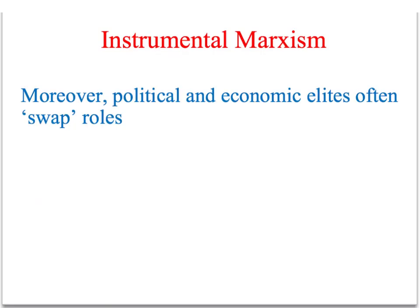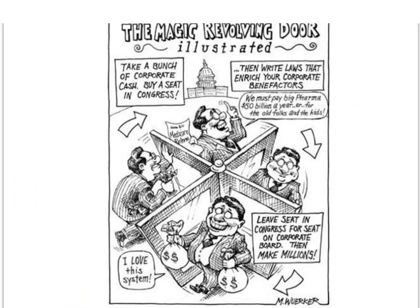Another factor leading to integration of political and economic elites is the constant swapping of roles. On retirement, senior civil servants and politicians often get highly paid jobs in the private sector, becoming personally very wealthy through exploiting their contacts and knowledge of the political system. This practice is generally referred to as the revolving door.